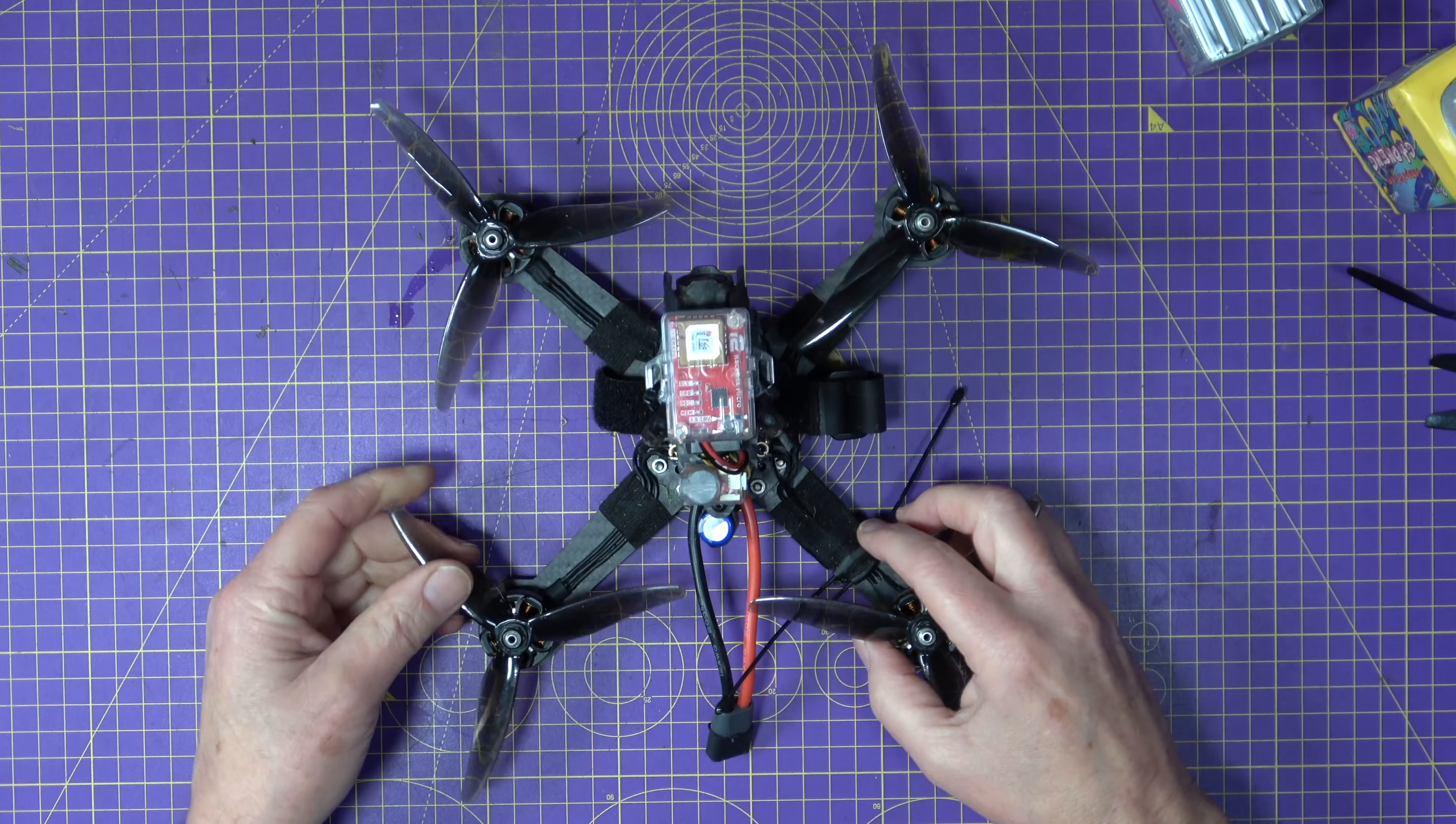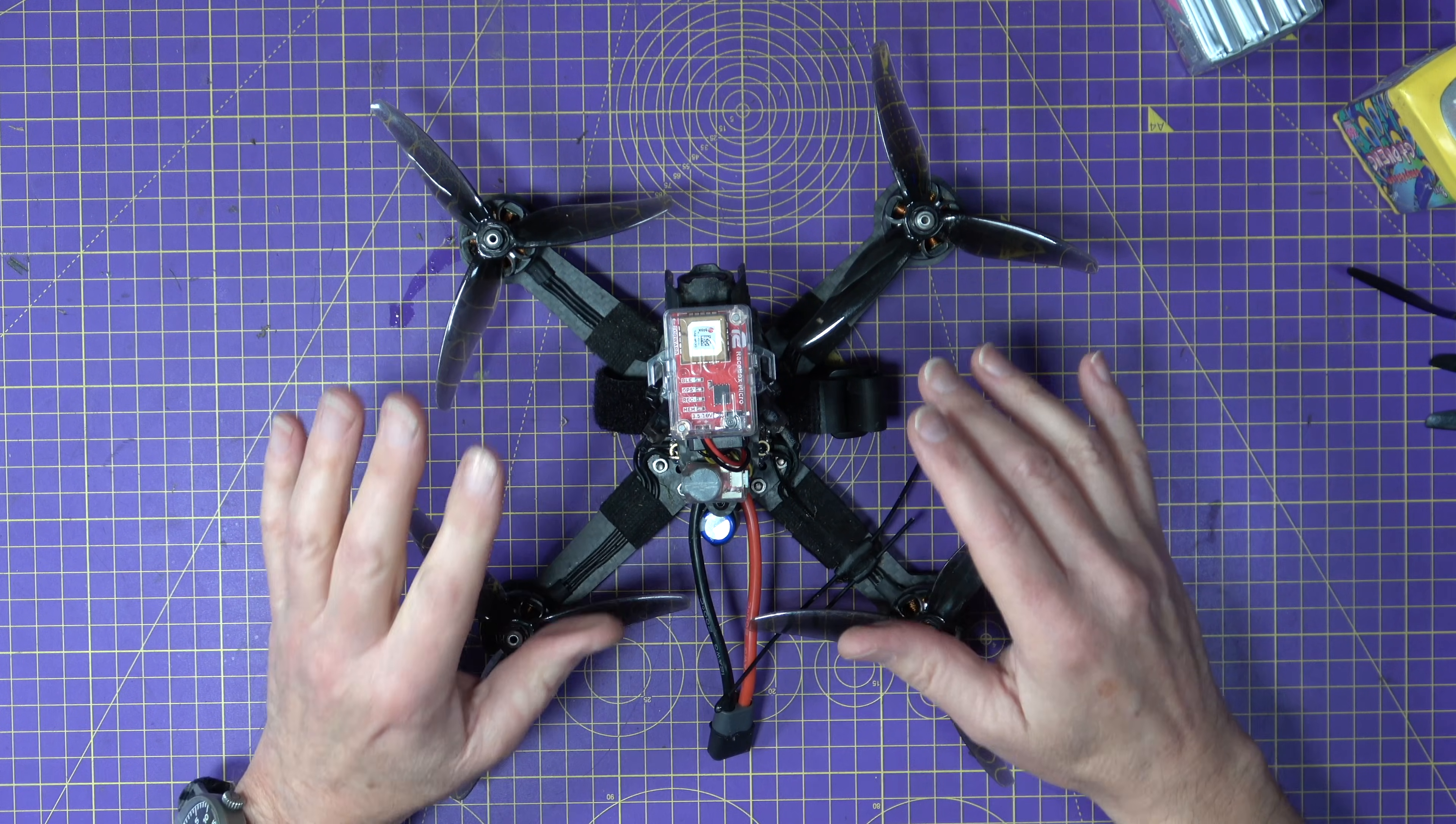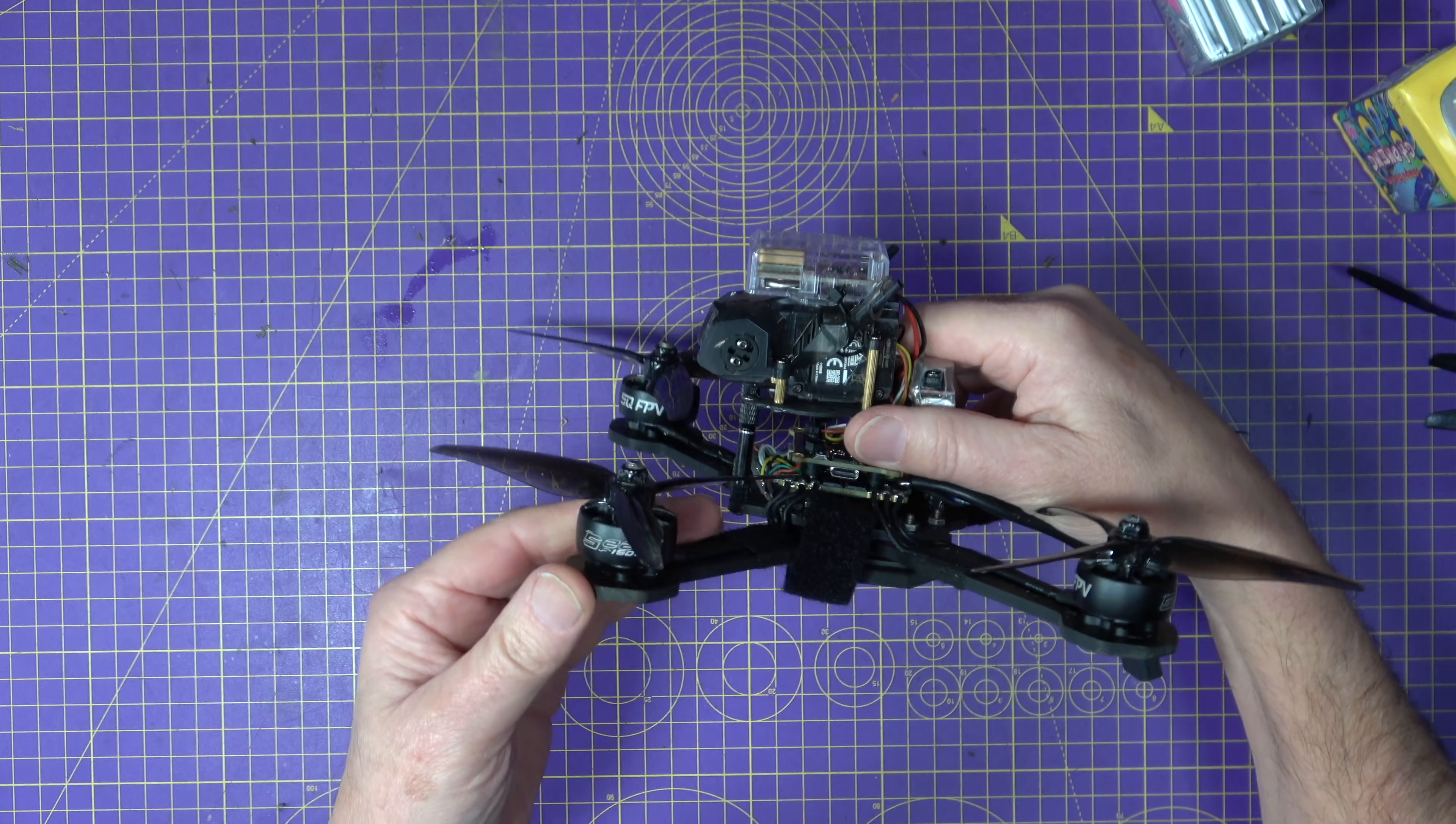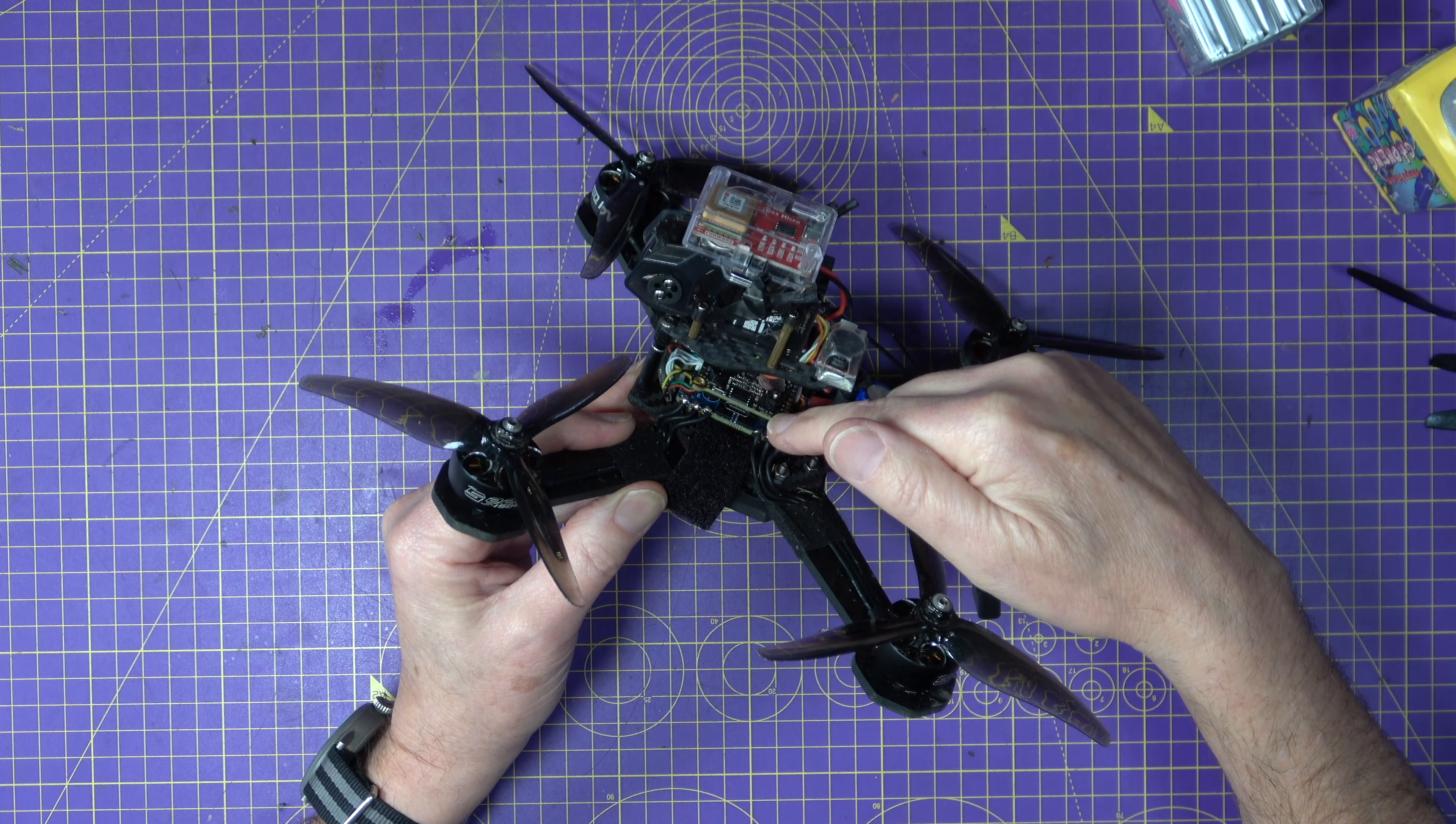Now when I built my ultimate 7 inch drone a few months ago I used the Secure flight controller ESC and motors and I was particularly impressed with the motors. Secure also very kindly supplied some of these SQFPV 2207 1500 kV motors, a Bluestone A1 70 amp ESC and a matching flight controller.